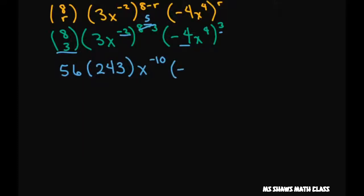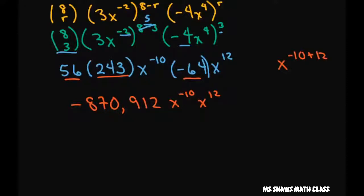Alright. And then take this one. And that's going to be negative 64. And then 4 times 3 is 12. Now when you multiply your coefficients, you get negative 870,912, x to the negative 10, x to the 12th. So we can write that as negative 10 plus 12, which equals x squared, which is what we wanted. That's why we had to solve for r.